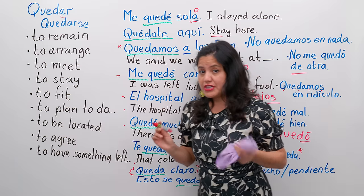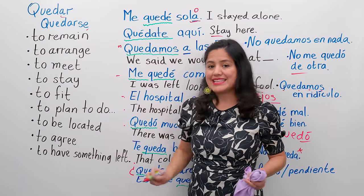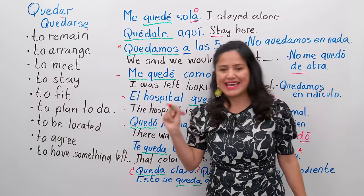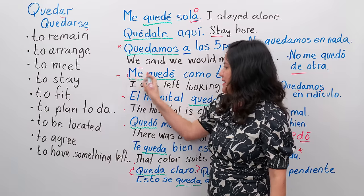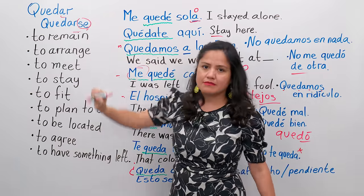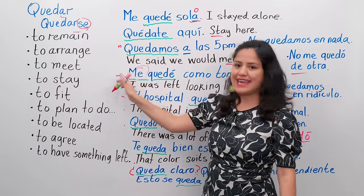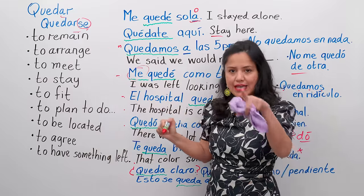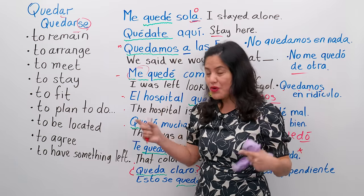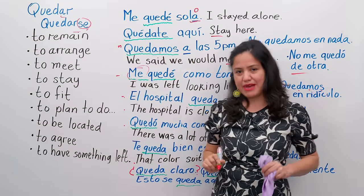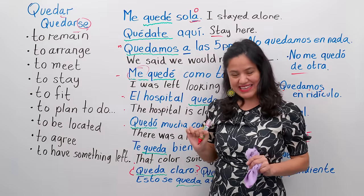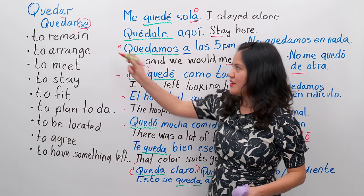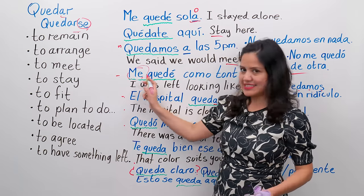The other thing I want to say is I put quedarse — so when you see me quedé como tonto or me quedé como tonta, you're really using quedarse. Quedarse would be: me quedé, te quedaste, se quedó — using the pronouns. If you want to learn more about this type of verbs, please watch my lesson about indirect and direct pronouns, and about reflexive verbs. I have three lessons about those topics and you can learn more about quedarse.